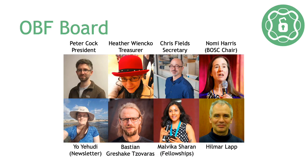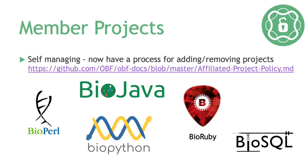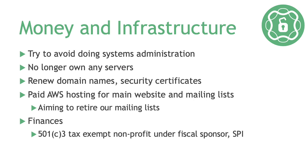We currently have an elected board of eight members, including three officer roles defined under the bylaws. A lot of activity happens within our self-managing member projects. Earlier this year, the OBF membership approved a formal policy for adding or removing affiliated projects. Volunteer time is a precious resource, so we're trying to minimise hands-on systems administration. Renewing domain names, security certificates, and paying for hosting are our main ongoing expenses, and we pay these directly through the SPI where possible.